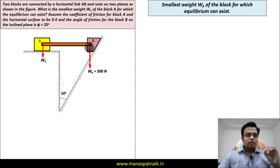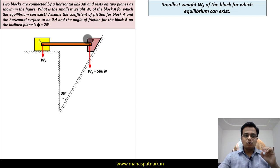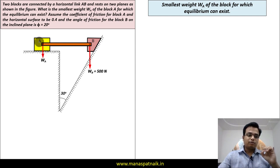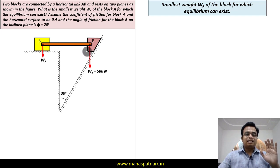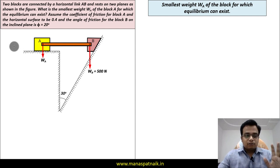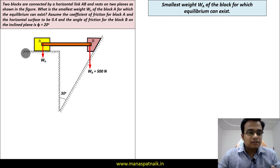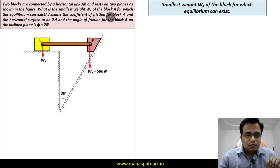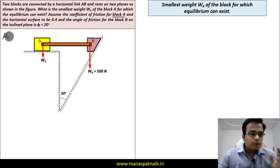To ensure the link stays horizontal and block B remains in position, we need to find the minimum weight of block A. The weight of block A must be sufficient to keep link AB horizontal and block B exactly where it is. There are two surfaces: the horizontal plane and the inclined plane. The coefficient of friction between block A and the horizontal surface is represented by mu_A, and it equals 0.4.